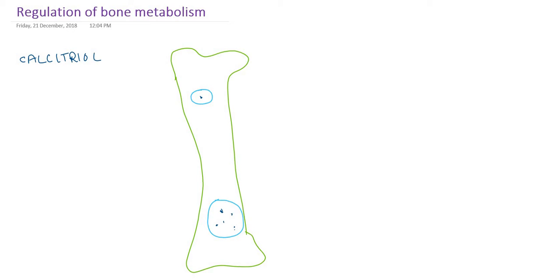Calcitriol is nothing but the active form of vitamin D. I will make a presentation on vitamin D in another video where we will see how it is activated. At this moment, it is simply activated vitamin D — calcitriol. Another important hormone which regulates bone metabolism is parathormone, released from three to four parathyroid glands located behind the thyroid gland. Another important hormone released from the thyroid gland is calcitonin.